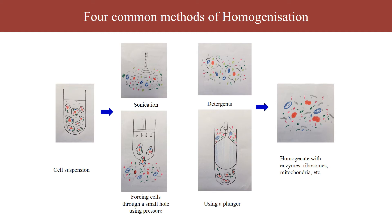The first step is to take some tissue and homogenize it. Homogenization means separating the cells, breaking the cells, and allowing the cellular contents to come into the medium. This process is called homogenization.